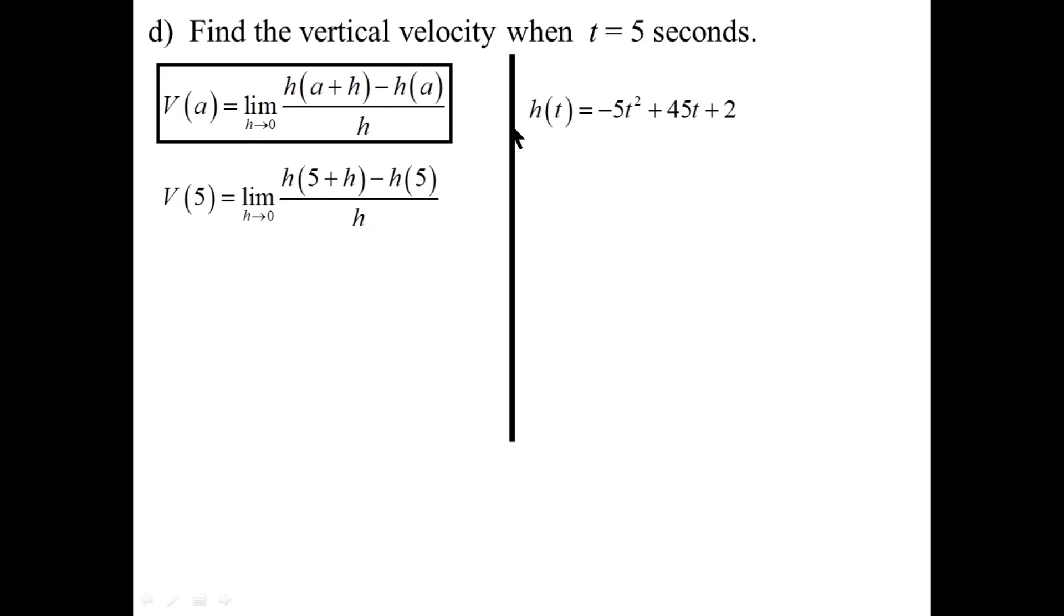We'll need h of 5 using our formula that we were given for height. And h of 5, we already figured that out. You could do it again if necessary. But sub in 5 for t and do the math. h of 5 is 102. And we'll have to sub in 5 plus h for t now to get h of 5 plus h.